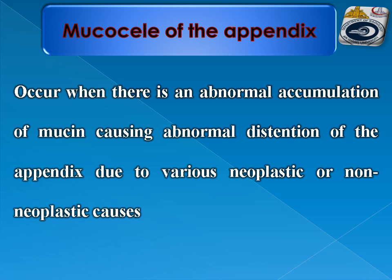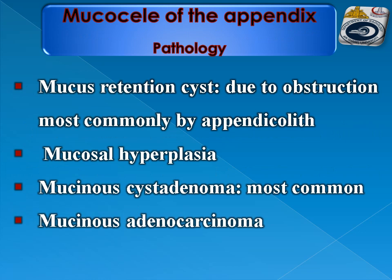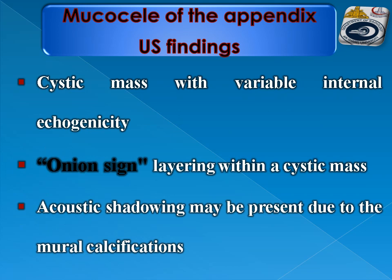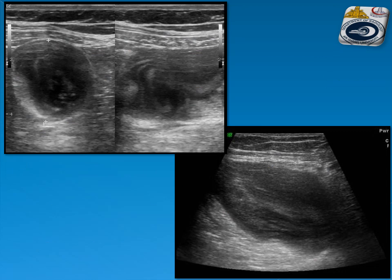Mucocele of the appendix occurs when there is an abnormal accumulation of mucin causing abnormal distention of the appendix due to various neoplastic or non-neoplastic causes. Causes include mucous retention cysts due to obstruction most commonly by an appendicolith, mucosal hyperplasia, mucinous cystadenoma (the most common cause), and mucinous adenocarcinoma, which is the most dangerous cause. Ultrasound shows a cystic mass with variable internal echogenicity; acoustic shadowing may be present due to mural calcification. The appendix is markedly distended with variable internal echogenicity.